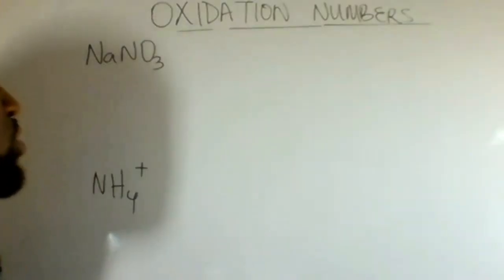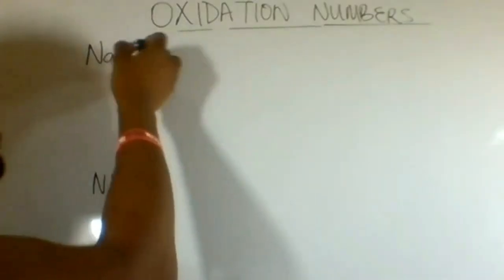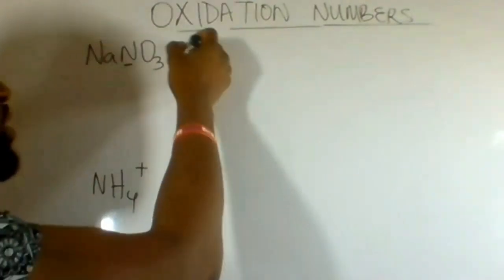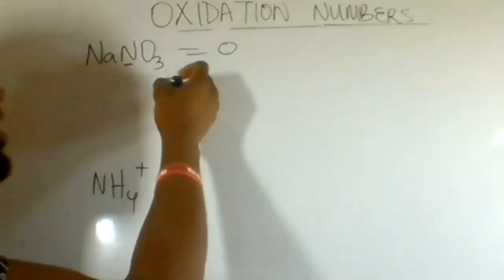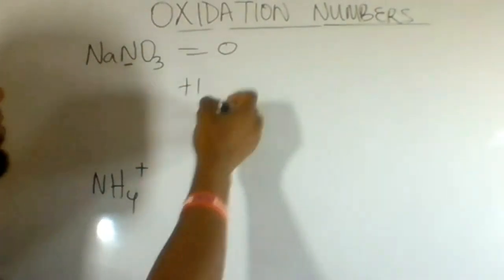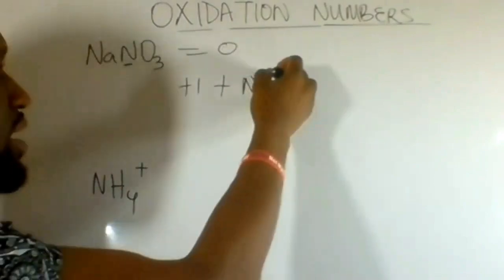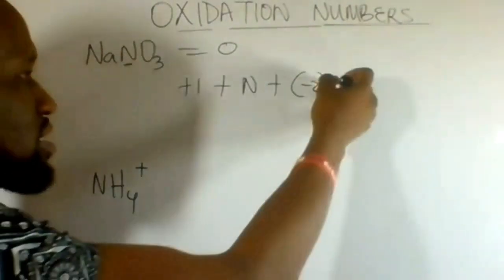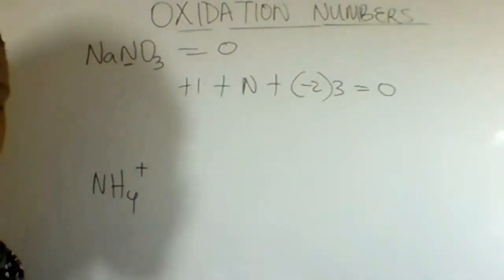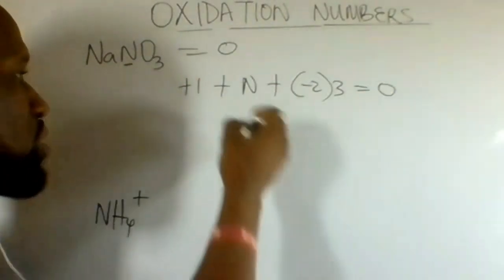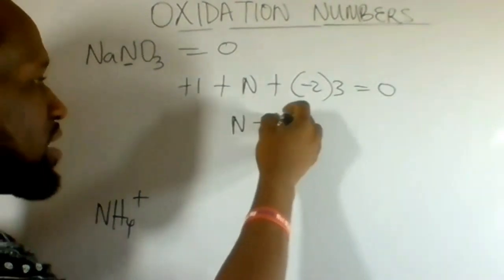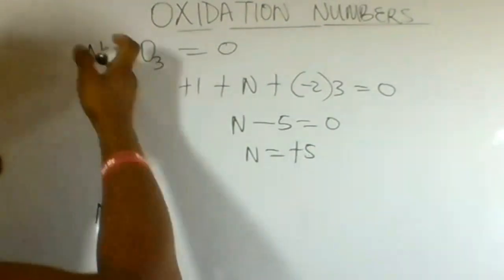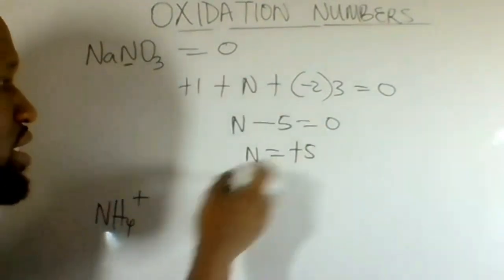In this example, we want to calculate the oxidation number of nitrogen in sodium nitrate. Add everything up and equate it to 0. Sodium is in group 1, so it is plus 1. Add that to nitrogen and add oxygen, which is minus 2 from group 6. With 3 oxygen atoms, equate the total to 0. Solving this out, N minus 5 equals 0, which means N is plus 5. Nitrogen in NaNO₃ is plus 5.